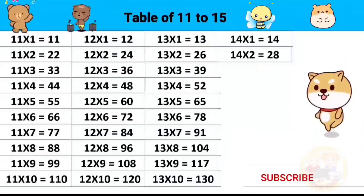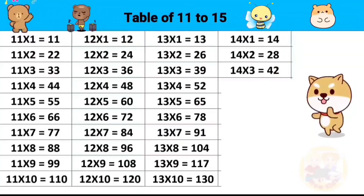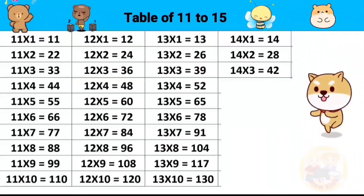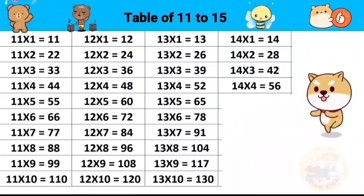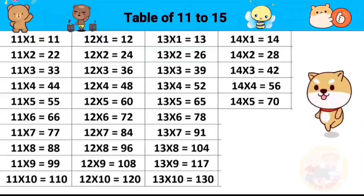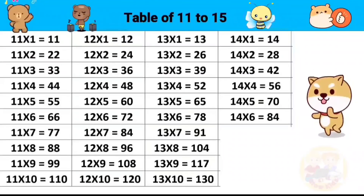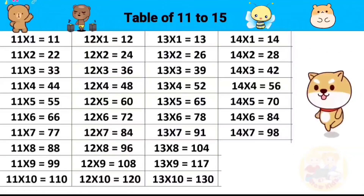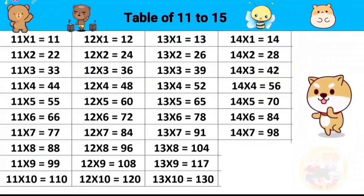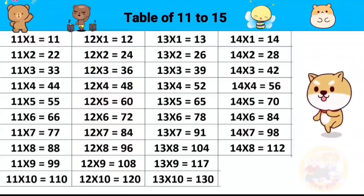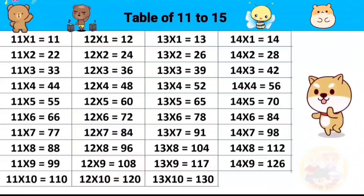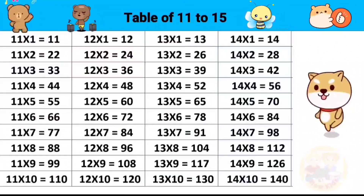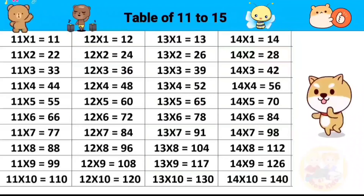Table of 14. Fourteen fours are fifty-six, fourteen fives are seventy, fourteen sixes are eighty-four, fourteen sevens are ninety-eight, fourteen eights are one hundred twelve, fourteen nines are one hundred twenty-six, fourteen tens are one hundred forty.